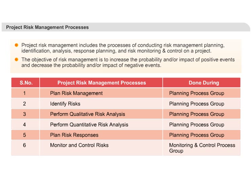There are six risk management processes, and out of that, five are part of a project planning group and one is from the monitoring and control process group. These processes are: plan risk management, identify risks, perform qualitative risk analysis, perform quantitative risk analysis, plan risk responses, and monitor and control risks. We will learn about these six processes in the next six slides.